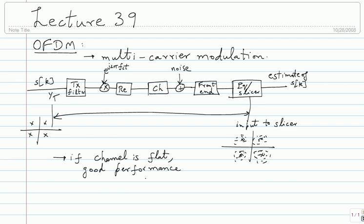This is a traditional single-carrier system. If the channel is flat, there is good performance; if the channel varies very wildly, then there are a lot of things you lose. Today, you keep getting larger and larger bandwidth to use around your carrier — your carrier is going into the gigahertz range — so your bandwidth is going to be at least in the megahertz range. The channel will never be flat over such a large frequency range.